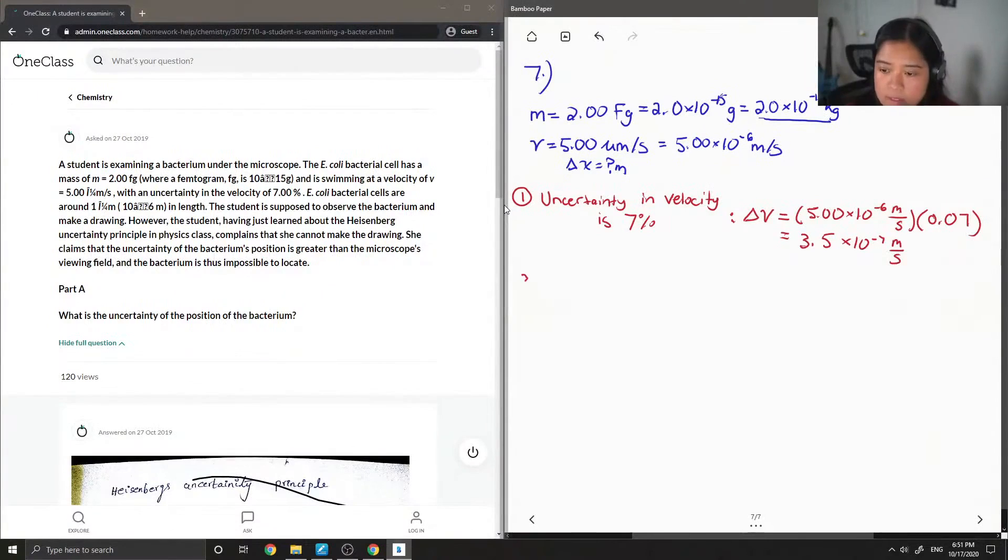Okay, so next I'm going to write down the equation for the uncertainty in momentum. Basically, this is delta p. And delta p equals mass times the uncertainty in velocity.